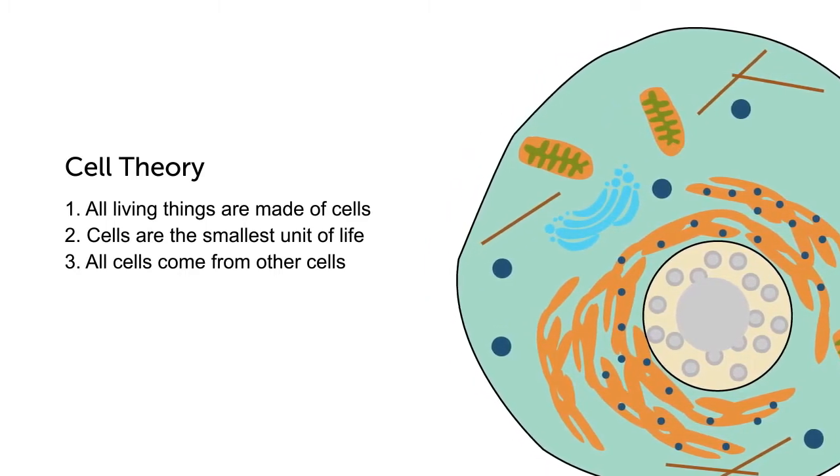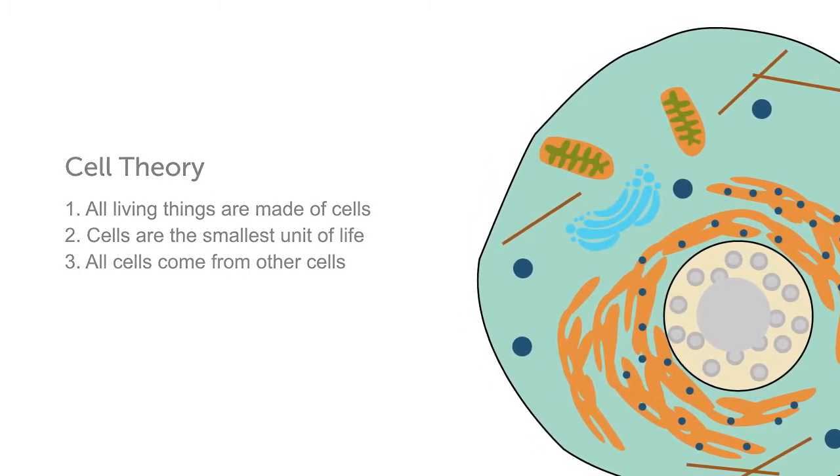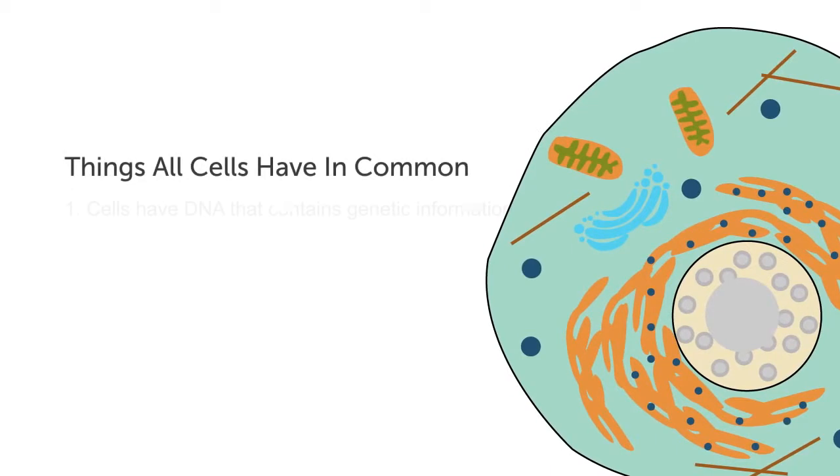Cell theory explains how cells work, but there are also three things that all cells have in common. First, cells have DNA that contain their genetic information.